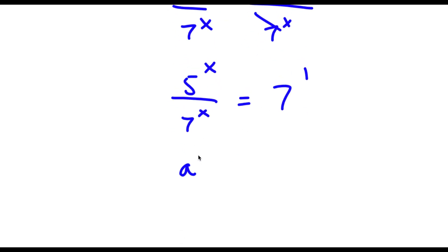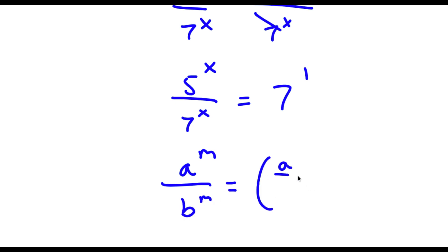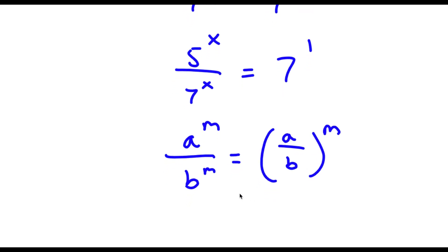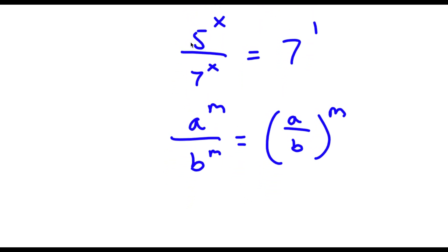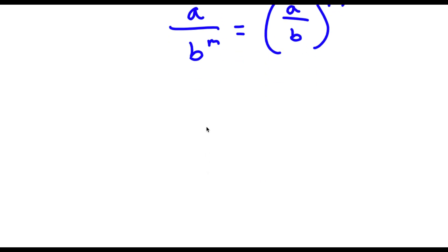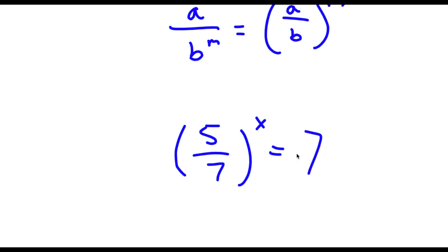Now if I have something in the form a to the power of m over b to the power of m, this is the same thing as a over b to the power of m. So 5 to the power of x over 7 to the power of x is going to equal 5 over 7 to the power of x, and this is equal to 7.